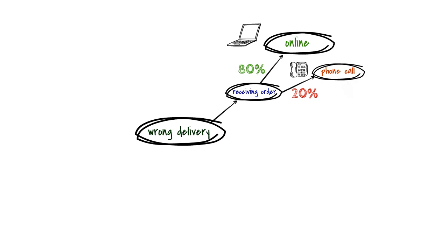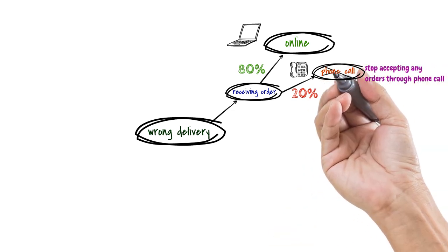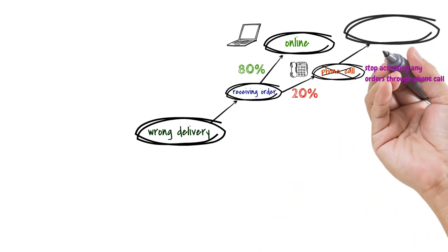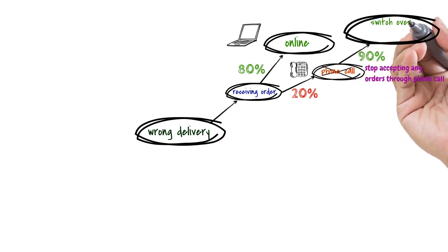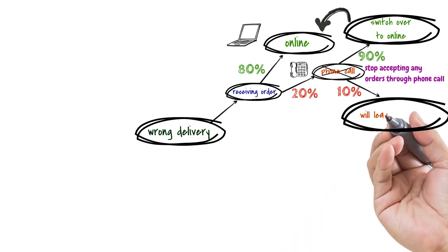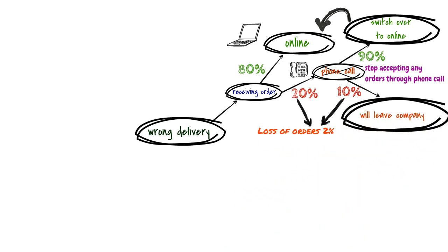As a possible solution, we may announce a new rule and stop accepting any orders through a phone call. That would prevent manual processing of the orders. But we have to ask ourselves, if that rule would cause loss of orders and sales. In estimates, 90% of our customers will switch over to online ordering and 10% will leave our company. Then the real loss would be 2% of all orders. With this information, it will be easier for us to decide if we want to implement the rule or not.